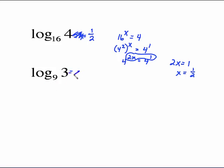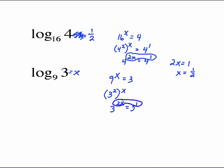Same setup: put equals x, go to exponential — 9 to the x equals 3. Use 3 as the common base. 9 is 3 squared raised to the x; using the exponent law, that's 3 to the 2x. Since 3 equals 3 to the first, and the bases are equal, the exponents must be equal: 2x equals 1, so x equals 1 half. Log base 9 of 3 equals 1 half because 9 raised to the 1 half power equals 3.